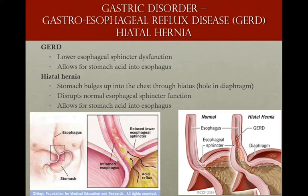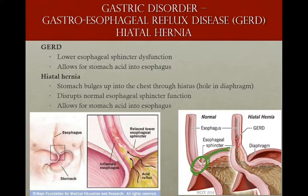GERD and hiatal hernia have the same symptoms but different pathophysiology. GERD means the esophageal sphincter has dysfunctioned and allows acid to reflux up into the esophagus. A hiatal hernia is where a piece of the stomach has actually herniated up through the diaphragm. There's an opening where the esophagus passes through the diaphragm called the hiatus. The esophagus is above the diaphragm and the stomach is below the diaphragm.